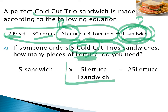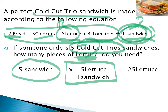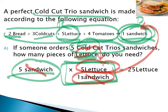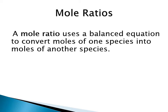We'll set it up using conversion factors as our analogy for how chemical reactions will be solved using stoichiometry. If you want to know how many pieces of lettuce you'd need to make five cold cut trio sandwiches, the ratio is five pieces of lettuce per sandwich. We have a given quantity — five sandwiches — we set up our conversion factor using ratios from the process, sandwiches cancel out, lettuce carries through: five times five gives 25 pieces of lettuce.